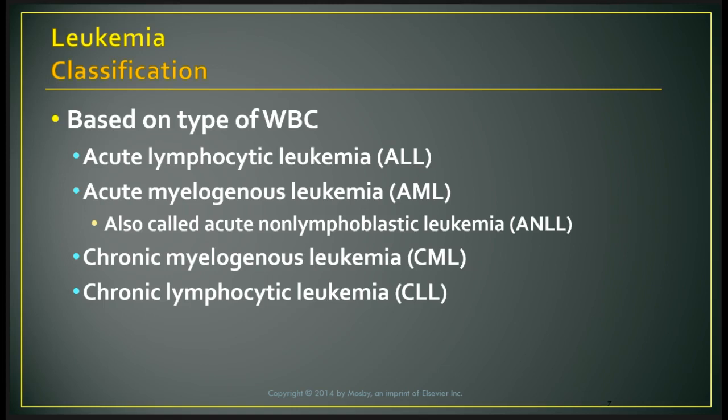Leukemias are classified based on the type of white blood cell affected. Just be aware of how they are classified and whether it's an acute or chronic type. These include acute lymphocytic leukemia, myelogenous, and acute non-lymphoblastic leukemias, along with their chronic counterparts.